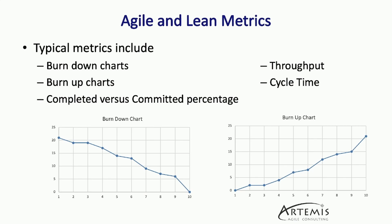Another metric is going to be your completed versus your committed percentage. This is the amount of work that was delivered at the end of the sprint versus how much work was committed at the beginning of the sprint. It's really important that this number be between 80 and 100%, perhaps even up to 105% if the team found they were able to complete some work early and had additional capacity. I would be very cautious about any percentages that go over about 105% because that may be indicative of an anti-pattern where the team does not feel comfortable committing to work they are clearly capable of delivering.